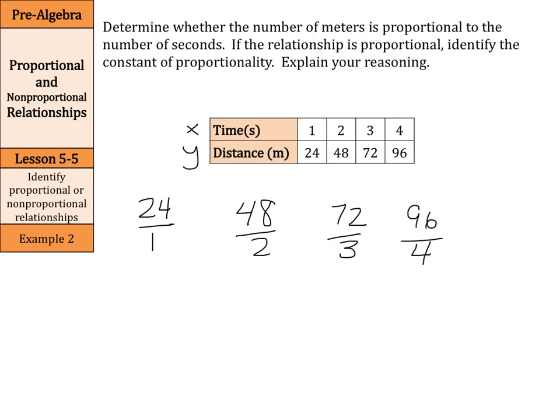In these, 24 over 1 is 24 over 1, but 48 over 2 simplifies into 24 over 1. 72 over 3 simplifies into 24 over 1, and 96 over 4 simplifies into 24 over 1. They're all the same ratio. It's a constant ratio.